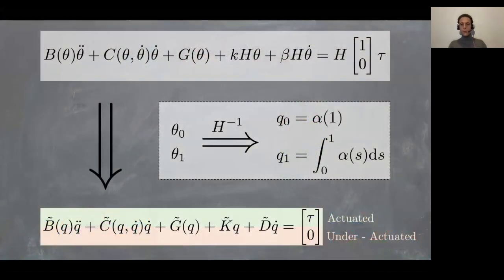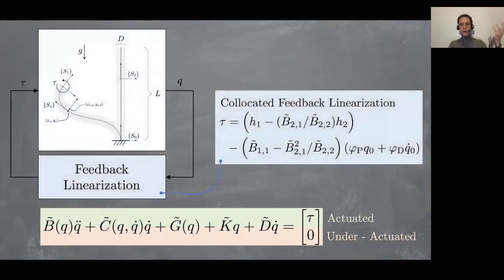First, what we show in the paper is that we can produce a linear change of coordinates from theta to q, such that the result is completely decoupled. We have an unactuated part completely decoupled from the actuated part of our robot. This allows us to do some analysis in terms of feedback linearization.